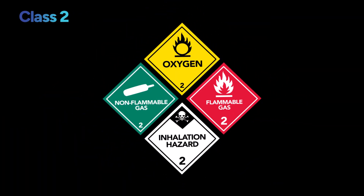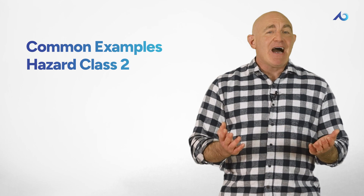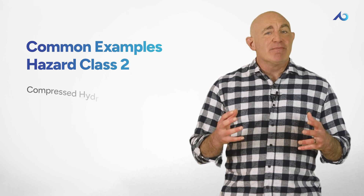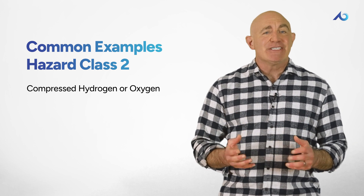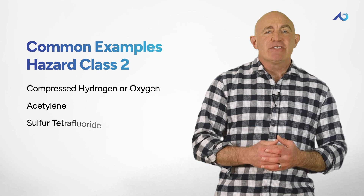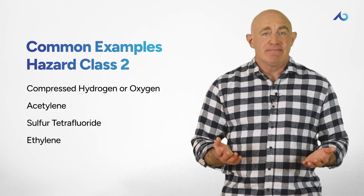Class 2 includes compressed gases, gases that were dissolved under pressure, as well as liquefied gases. These gases may or may not be flammable and can be poisonous or toxic. Some common examples of hazard class two include compressed hydrogen or oxygen, acetylene, sulfur tetrafluoride, and ethylene.